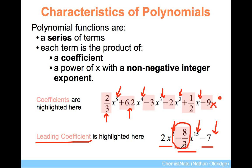Now, what is the degree of this polynomial? Well, because the highest exponent we find on x is 5, the degree of the polynomial is 5.